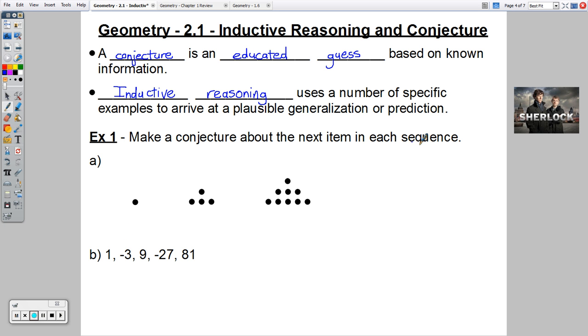Make a conjecture about the next item in each sequence. It looks like we have one and then we have four. But the picture is expanding out. It looks like I'm basically taking what I had here, copying the dot and adding a row to it. So this is going to be three high, this is two high, this is one high. This one should be four high.